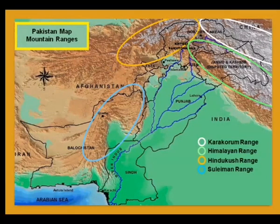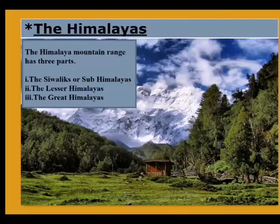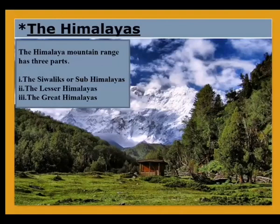In this map, we can see all three mountain ranges and where they are located. The green oval is showing the Himalaya mountain ranges, the white oval is showing the Karakoram mountain ranges, and the mustard or orange oval is showing the Hindu Kush mountain ranges.